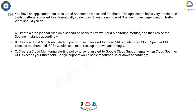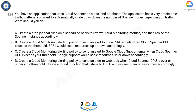Option C: Create a Cloud Monitoring alerting policy to send an alert to Google Cloud support email when Cloud Spanner CPU exceeds your threshold; Google support would scale resources up or down accordingly. Option D: Create a Cloud Monitoring alerting policy to send an alert to a webhook when Cloud Spanner CPU is over or under your threshold; create a Cloud Function that listens to HTTP and resizes Spanner resources accordingly.